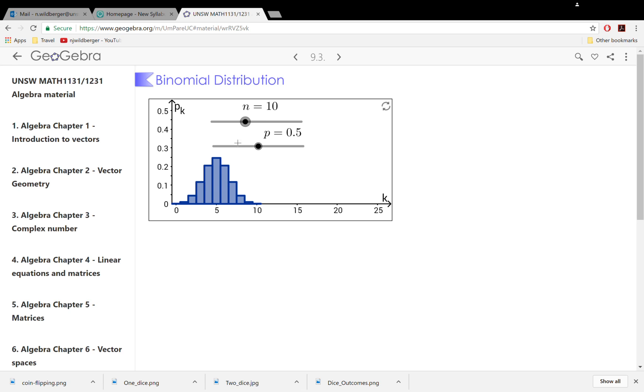In this case, the parameter n is 10. There are generally two parameters associated with a binomial distribution. n is the number of times you're going to toss the coin, and the other one, p, is the probability of getting a head on one toss.